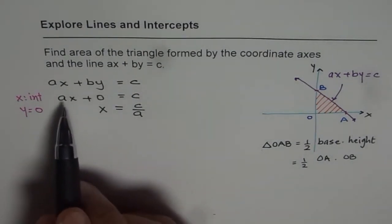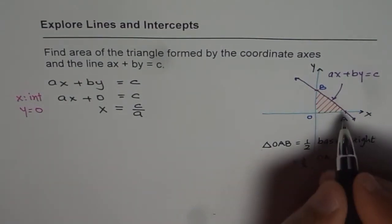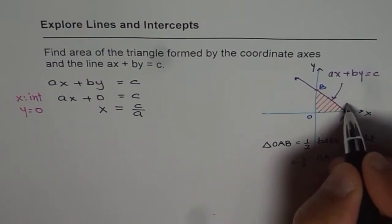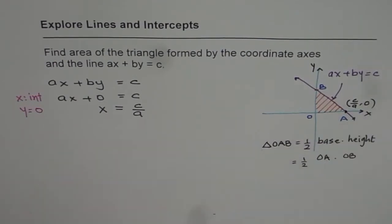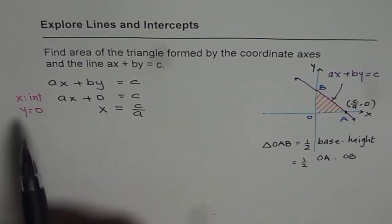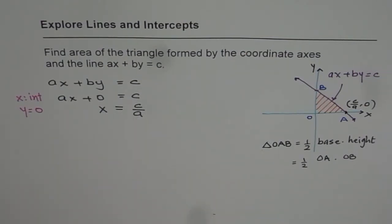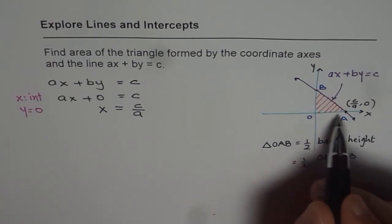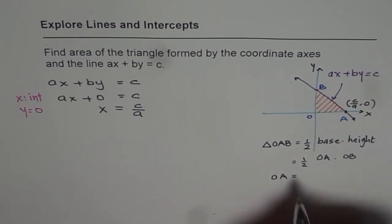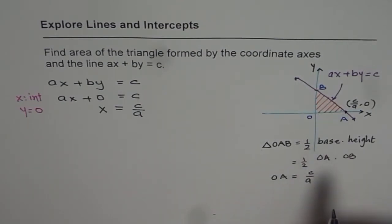When we say the x-intercept is c over a, referring to the diagram, this point is basically c over a, comma 0 — x-value is c over a when y equals to 0. Therefore c over a is also equal to the length of OA. So we know OA equals c over a. We got the base of the triangle by finding the x-intercept.